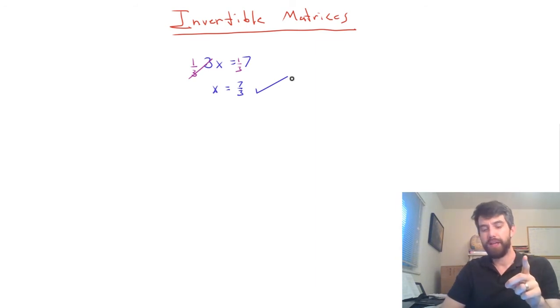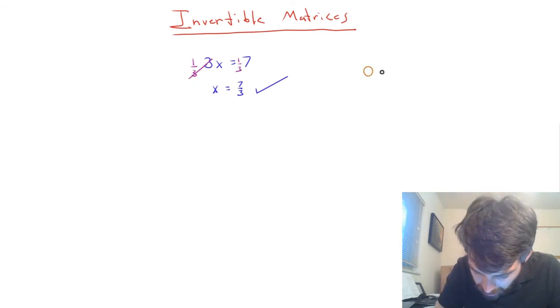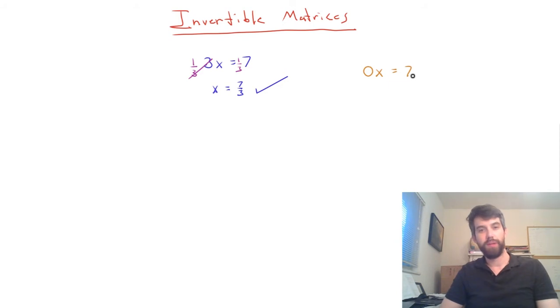I also want you to note that the multiplicative inverse trick works pretty well for a large set of numbers, but it doesn't work well for anything like this. 0x equal to 7. The reason why I can't do the same trick for that kind of equation is that I can't have a multiplicative inverse to 0. There's not some other number where 0 times that other number is equal to 1 the way 3 times 1 third was equal to 1. Okay, so that's our intuition from numbers.